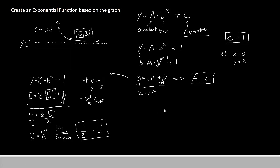So let's put all of it together. We have a, we have b, we have c. And so we'll say y equals 2 times 1 half raised to the x plus 1. Here's a, b, and c. And there you have it. There's our exponential function. That's how you start from a graph and end with an exponential function.